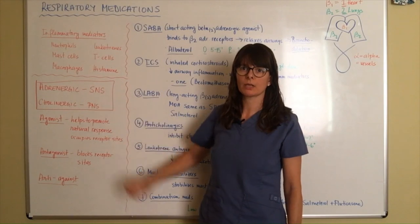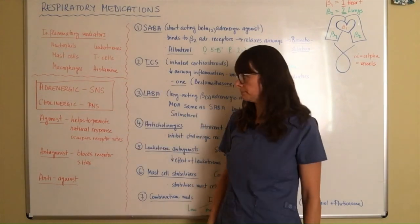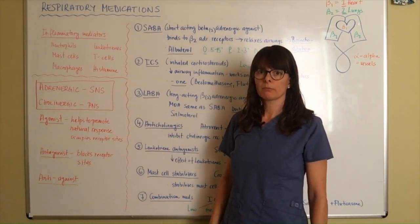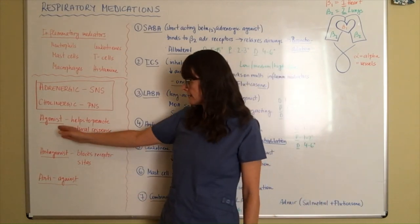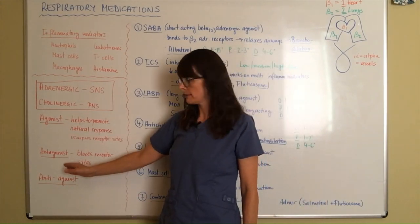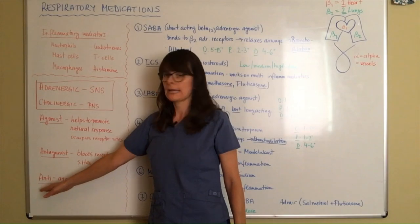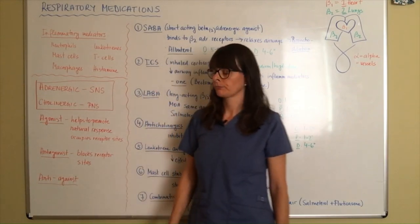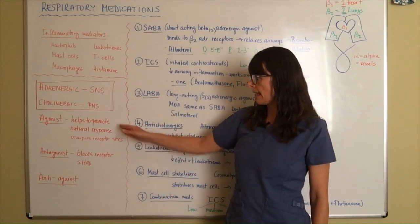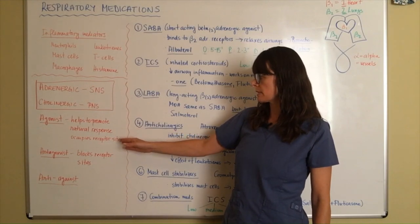Whenever you see these terms—adrenergic or cholinergic—you know they are working either on the sympathetic or parasympathetic nervous system. In addition, medications can be agonists or antagonists, or they can be anti- (against something). An agonist helps to promote the natural response.